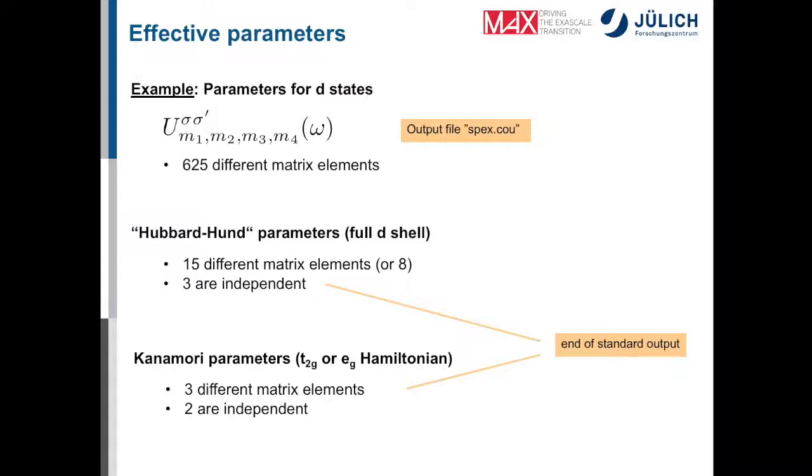I put here quotation marks Hubbard Hund because usually in the literature they're not called like that. They actually don't have really a name to separate them from the Kanamori parameters here, but we just use this terminology in the Spex code. You can also go ahead and simplify the Hamiltonian or correlated subspace. For example, for strontium vanadate, you might as well simply restrict everything to the T2G bands. In other systems, you might want to create a Hamiltonian out of EG bands. And then it can be shown that only three of these matrix elements are different and only two are independent.